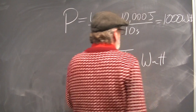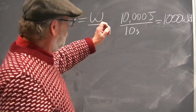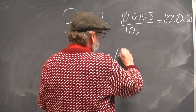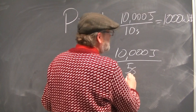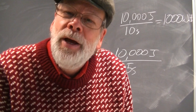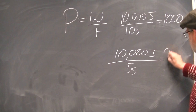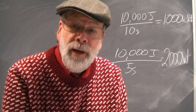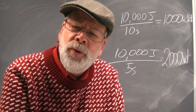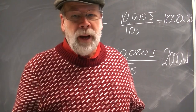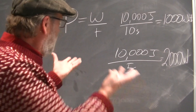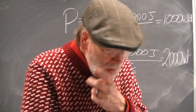So if I did 10,000 joules in 10 seconds, that would be 1,000 watts. If you did 10,000 joules worth of work in five seconds — twice as fast — that's going to be 2,000 watts. You did the same work but used much more power doing it, which means you were able to do it much faster. So this is the idea of power: you take the work, divide it by the time, and that gives you the power of something.